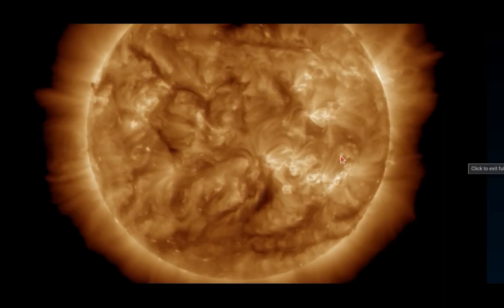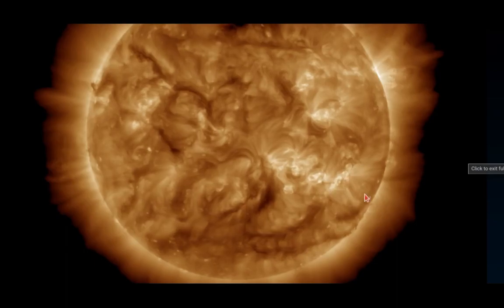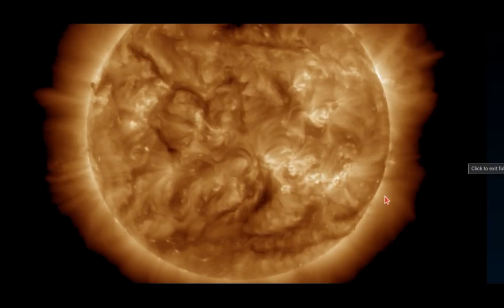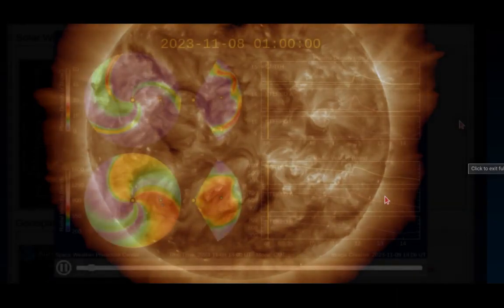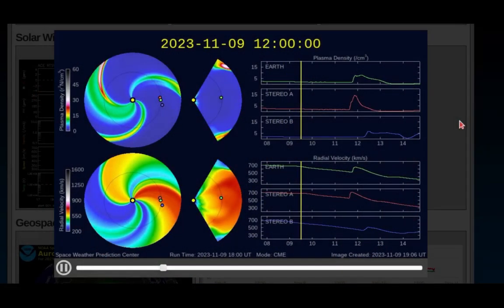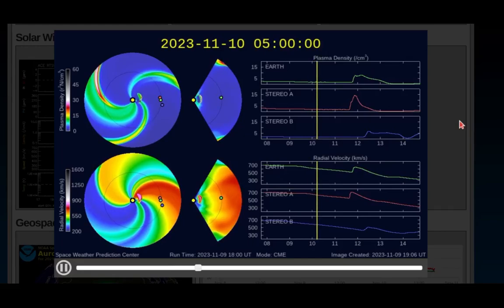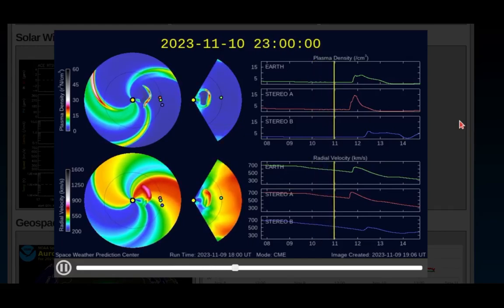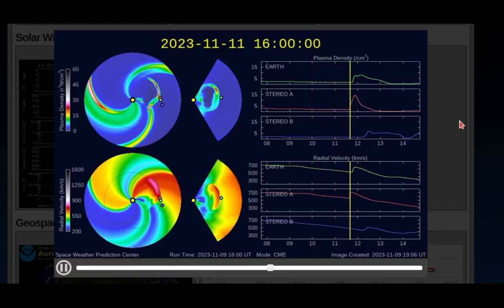Moderate space weather events, like a KP of 0 or a KP 5 or 6, which is certainly going to happen soon after the next 24 hours, moderate events like these can be felt by sensitive individuals who know they have conditions and they're able to feel them.